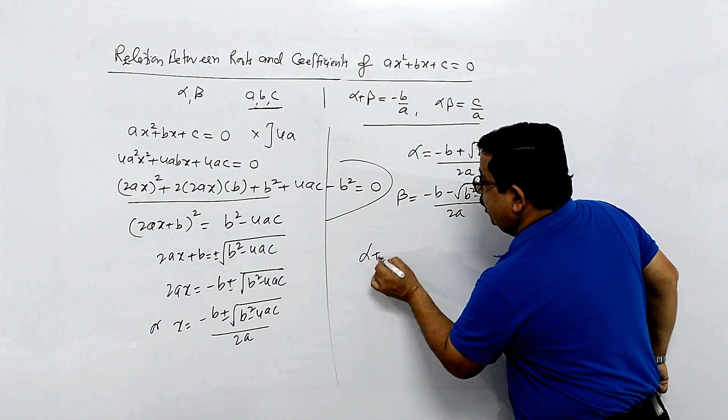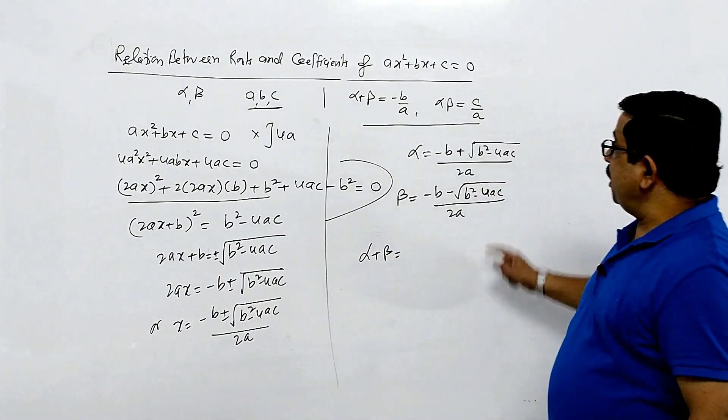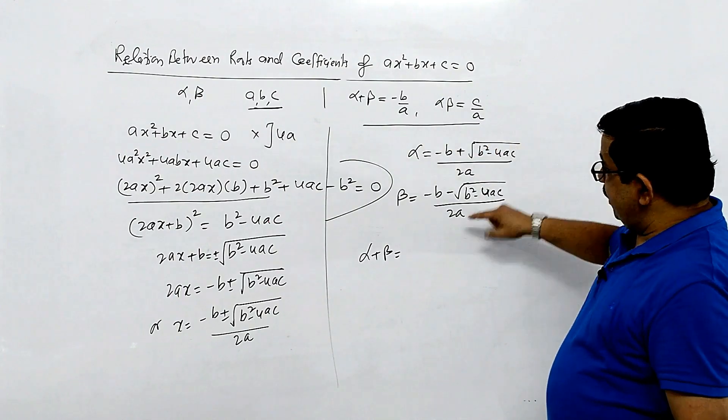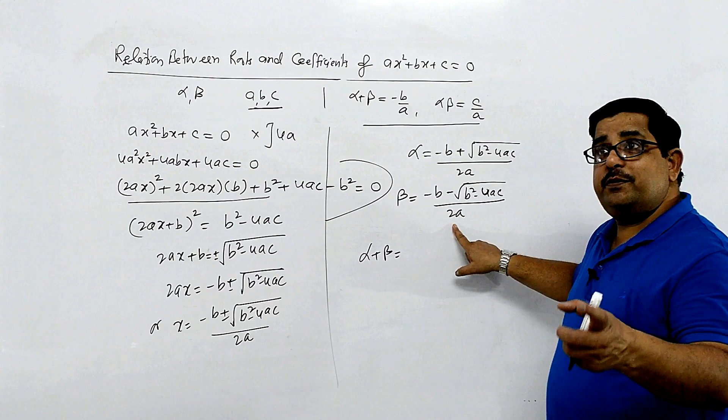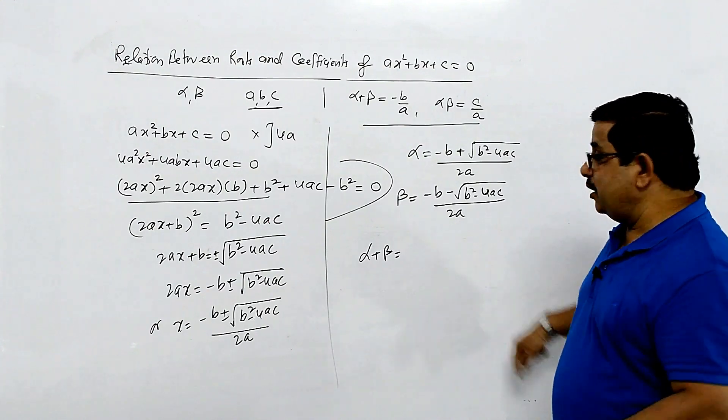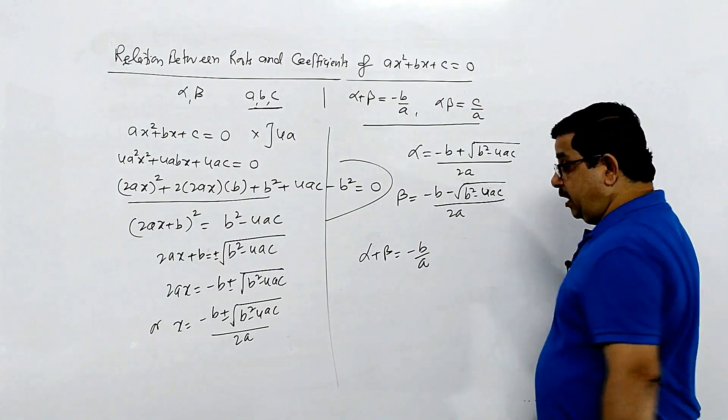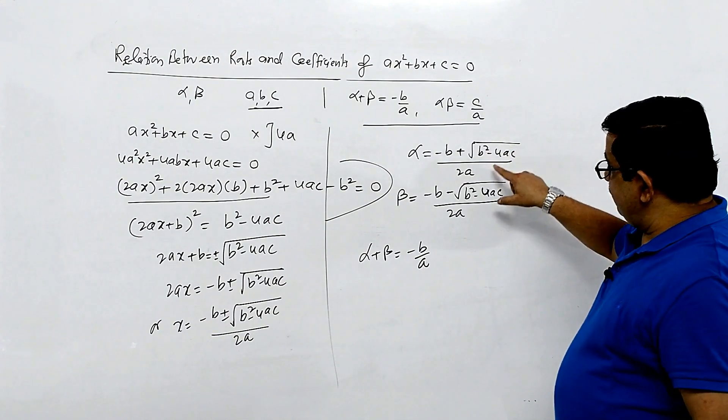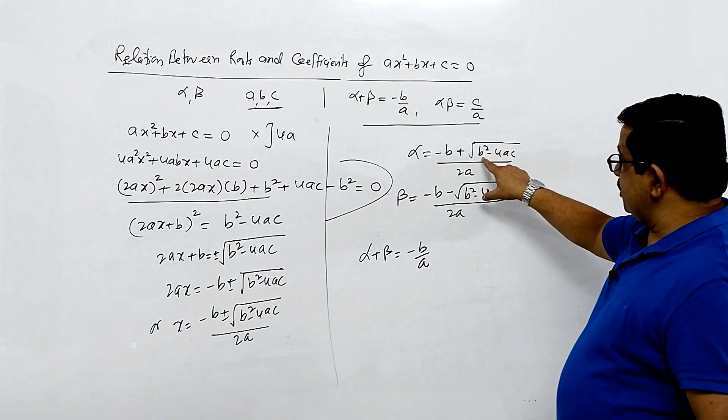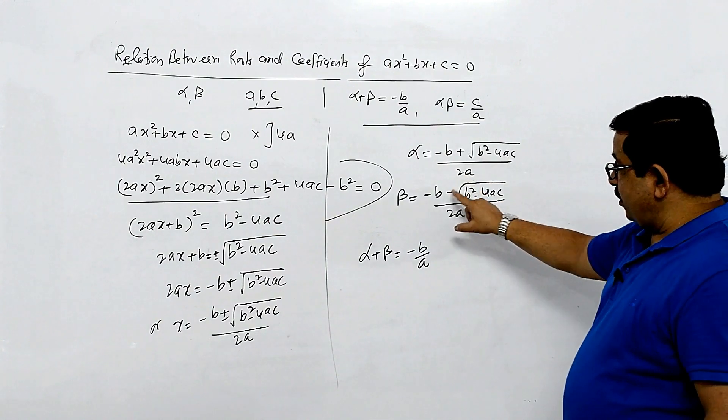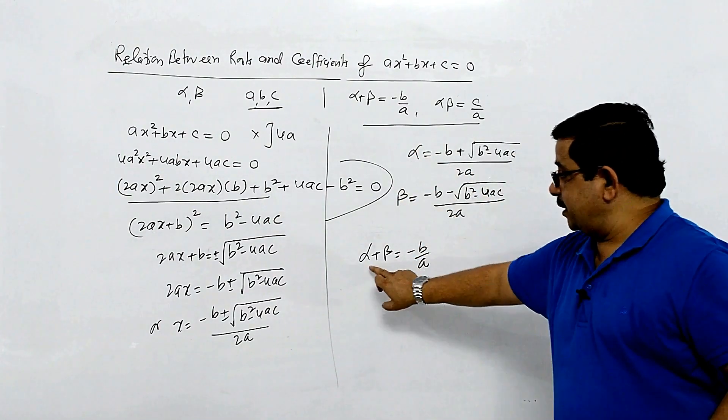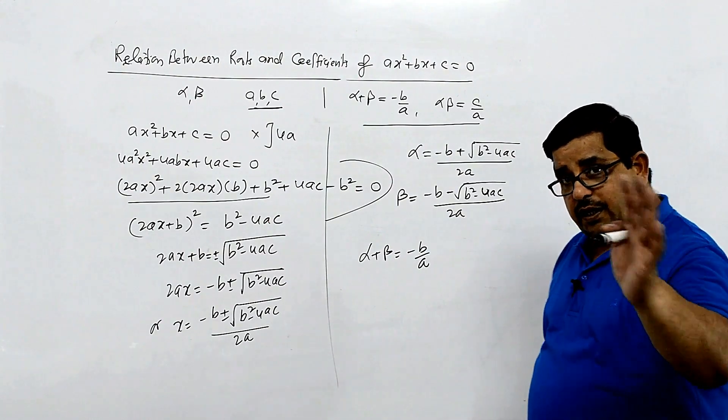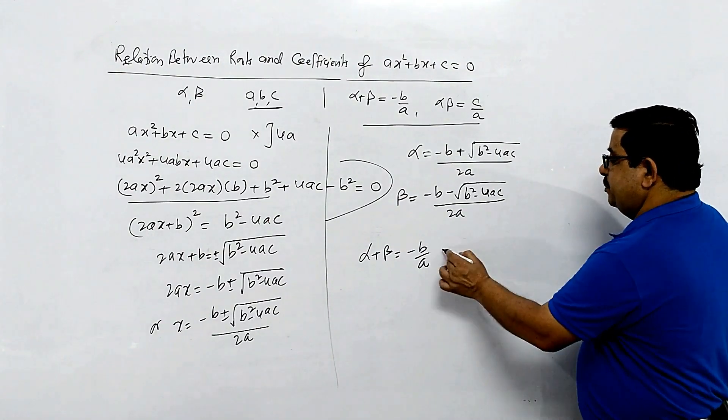Now if we take the sum of these two, alpha plus beta equals minus b by 2a plus minus b by 2a. The square root terms cancel out as one is plus and one is minus. Adding these gives minus 2b by 2a, which equals minus b by a.